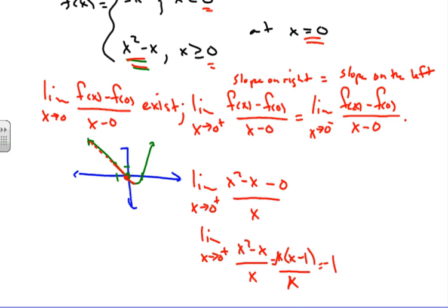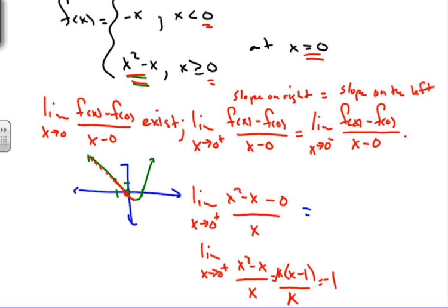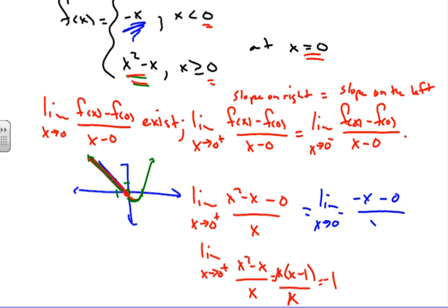Now we verify the left side. The left piece is -x, which applies for x < 0. We find the limit as x approaches 0 from the left of [f(x) - f(0)] over x, which is [-x - 0] over x = -x over x. That simplifies to negative 1. So the limit as x approaches 0 from the left is also negative 1.